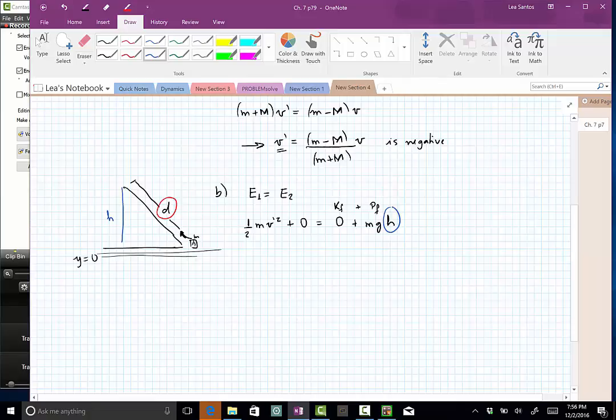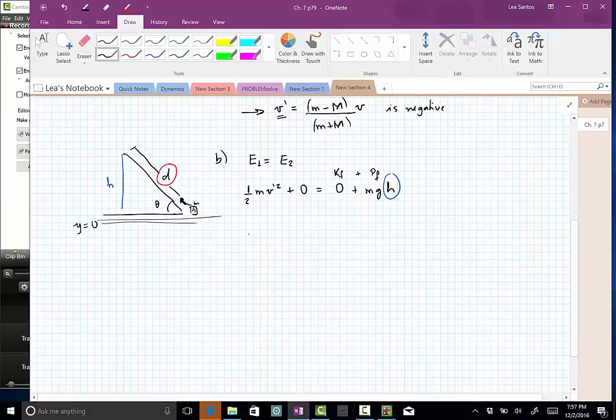and this is not actually the question of the problem. What they want to know is how far above the incline we went. What is the D? So to find the D, we have to remember that they gave us the angle of this incline, and we know that sine of theta is equal to H divided by D, and from that we can find that D is H divided by sine of theta.